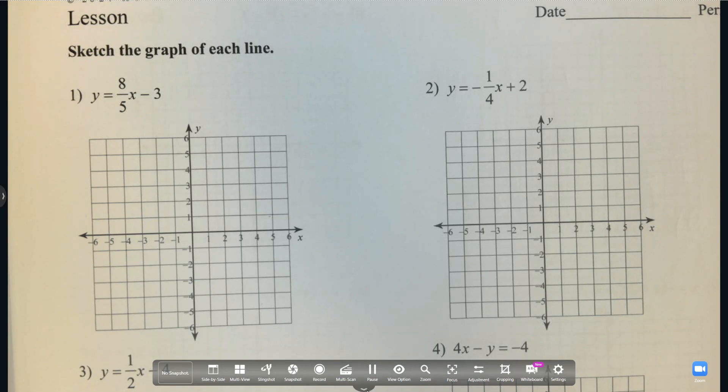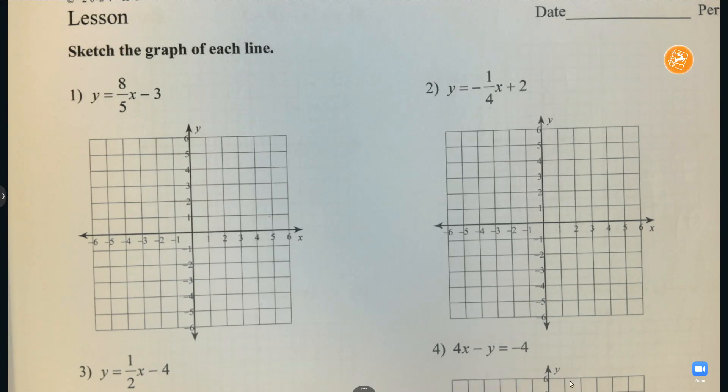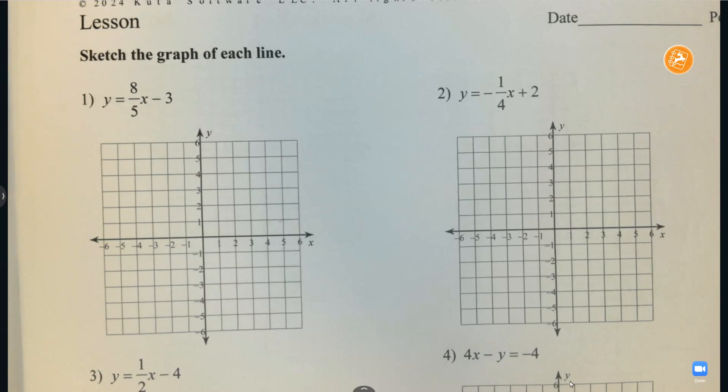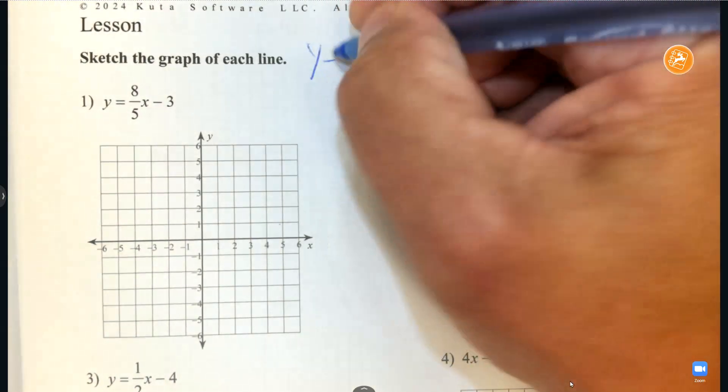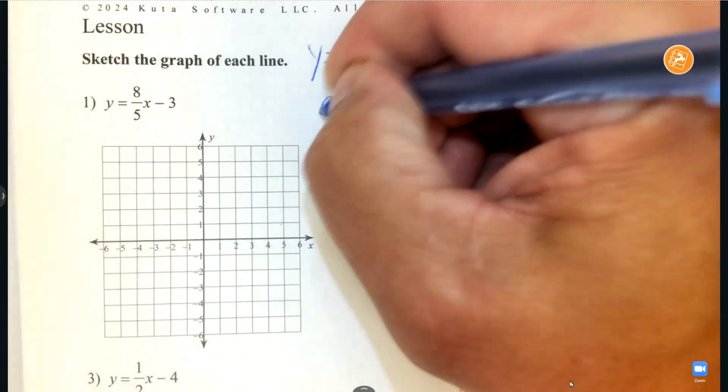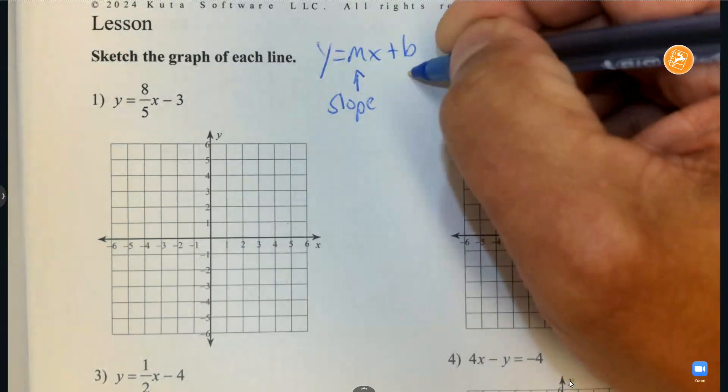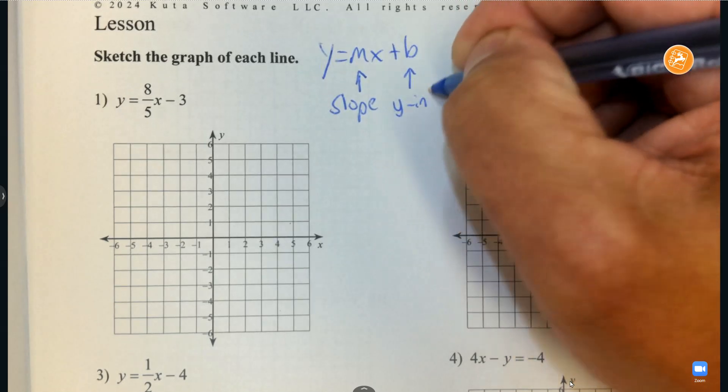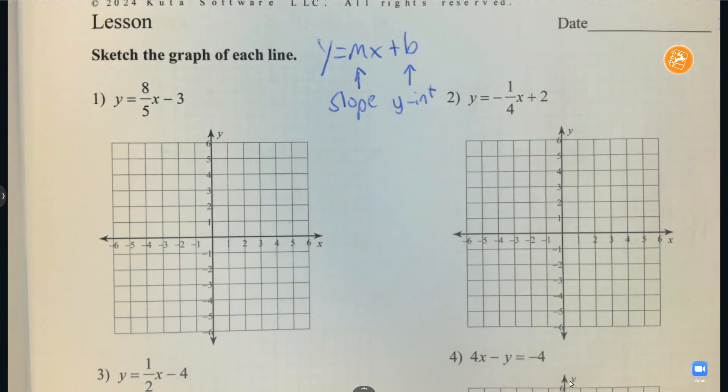We're going to graph some lines and some parabolas. So number one is a line. Some of you might be familiar with mx plus b, where the number with x is called the slope.